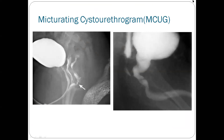MCUG, Micturating Cystourethrogram. The contrast is steady and these X-rays are helpful to understand the underlying communication with other structures of the body. In this X-ray, the urinary bladder and urethra are visible along with the uterus and vaginal tract, plus the gastrointestinal tract. These three tracts communicate with each other through the common channel. So persistent cloaca is the important finding in this contrast study.